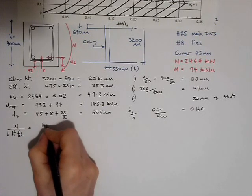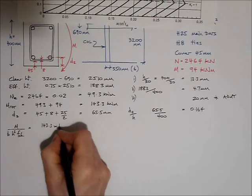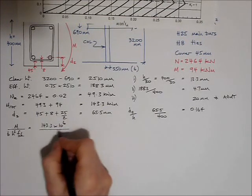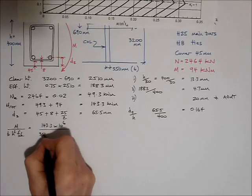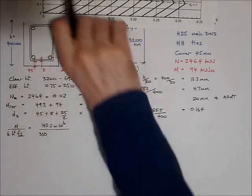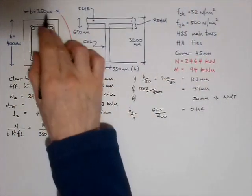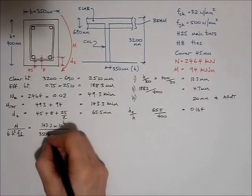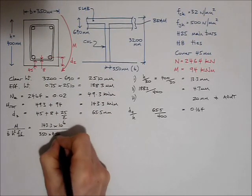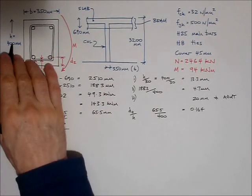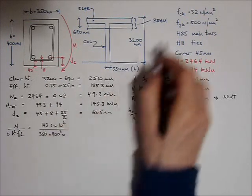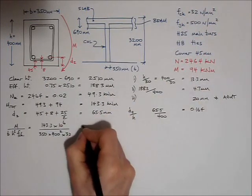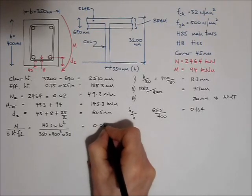So for us, the bending moment is 143 times 10 to the 6th, divided by 350, that's the width of the column, divided by 400 squared, that's H squared, and the strength of the concrete, which is 32. That comes out to be 0.08.